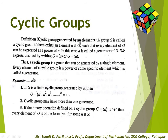The first point is cyclic groups. Definition of cyclic group: a group G is called a cyclic group if there exists an element A belonging to G such that every element of G can be expressed as a power of A. In this case, A is called a generator of G. We write G = ⟨A⟩. Thus, a cyclic group is a group that can be generated by a single element, and every element is a power of some specific element called the generator.